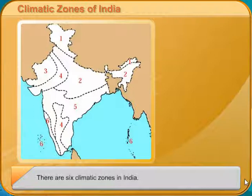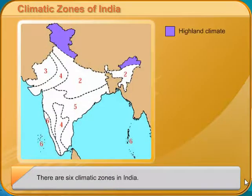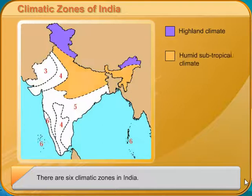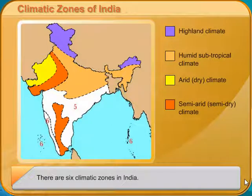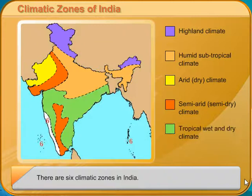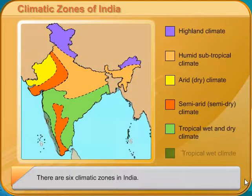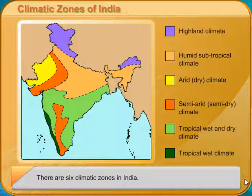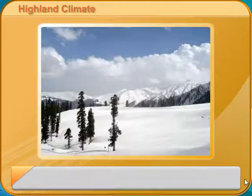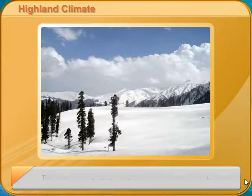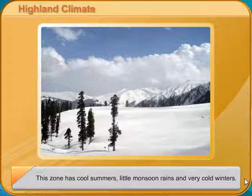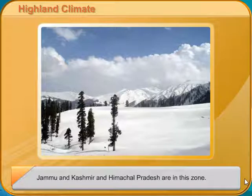These are the six climatic zones in India. Highland Climate: This climate can be found in the high-altitude regions of India. This zone has cool summers, little monsoon rains, and very cold winters. Jammu and Kashmir and Himachal Pradesh are in this zone.